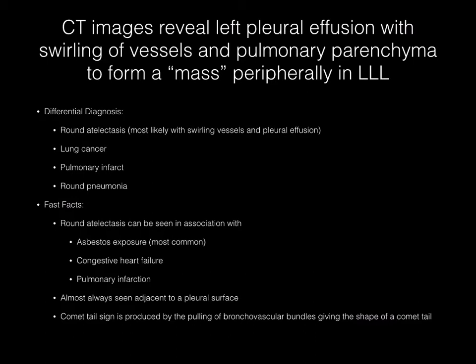This CT image demonstrates a left pleural effusion with swirling of the vasculature and pulmonary parenchyma to form a sort of mass peripherally in the left lower lobe. The differential diagnosis here should include round atelectasis, and this is the most likely diagnosis with the swirling of vessels and the pleural effusion. Also included in the differential could be lung cancer, pulmonary infarct, and round pneumonia, especially if it is a younger patient.